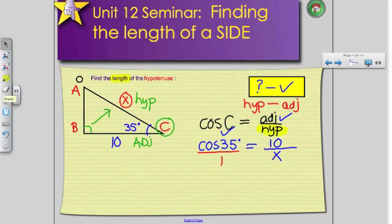Okay, so can someone tell me what I should do next? Yes, because I have essentially a fraction and another fraction separated by an equal sign. So whenever you have that situation, we're going to cross-multiply. So I have x times my cos-35 is equal to 10 times 1, which is 10.